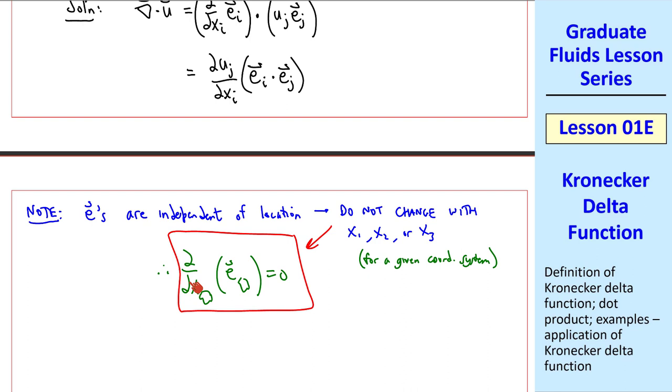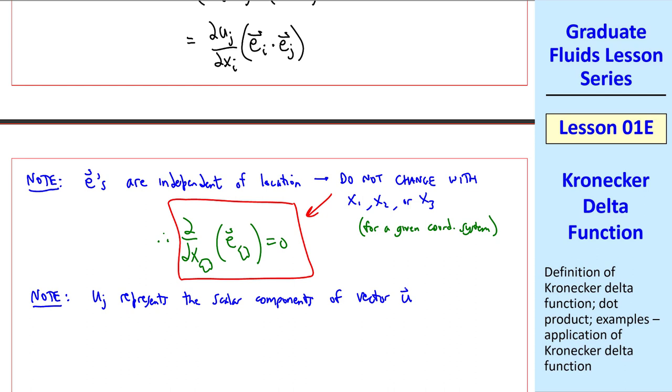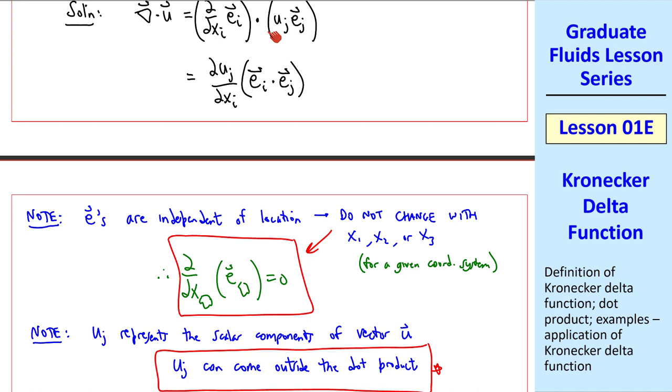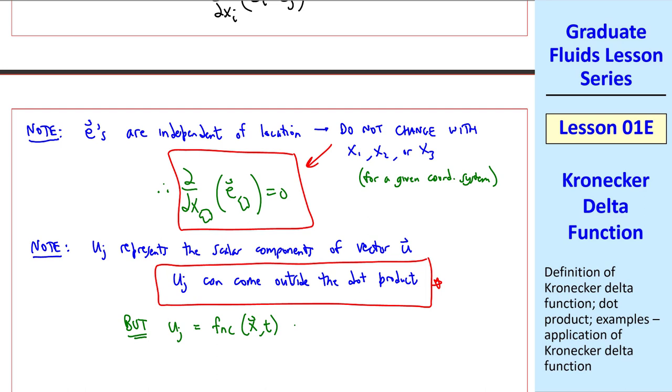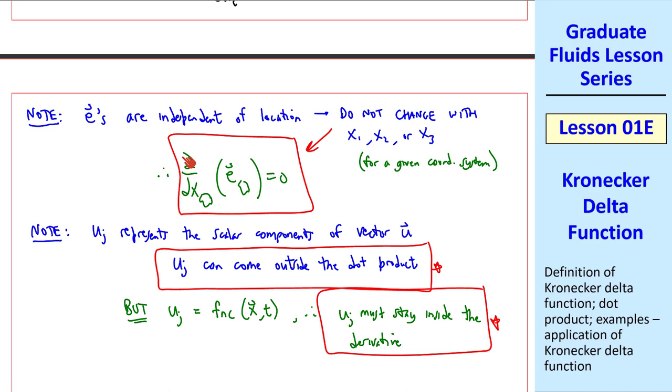The unit vectors don't change with location. That's why I was able to take the ei outside of this derivative. As another note, uj represents the scalar components of vector u. From the dot product's point of view, the uj can come outside of the dot product. In other words, it's just a scalar component that is not affected by a dot product. On the other hand, uj is a function of space and time, in general. Therefore, uj must stay inside the derivative. These two are kind of opposites. Unit vectors don't change with location, so ei can come outside the derivative. On the other hand, uj is a function of space, so it must stay inside the derivative.